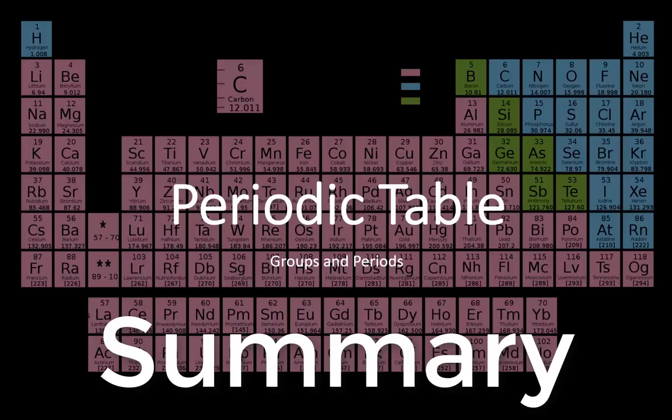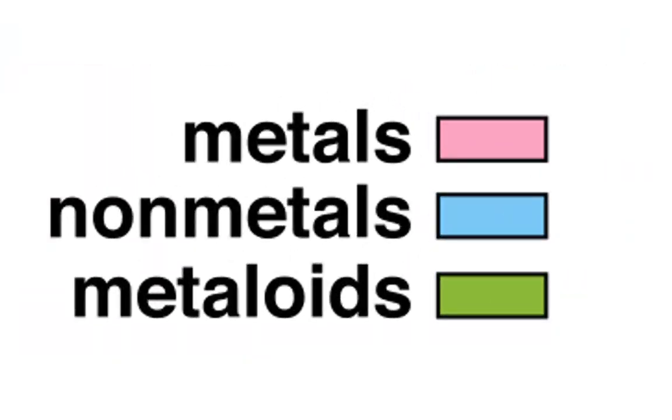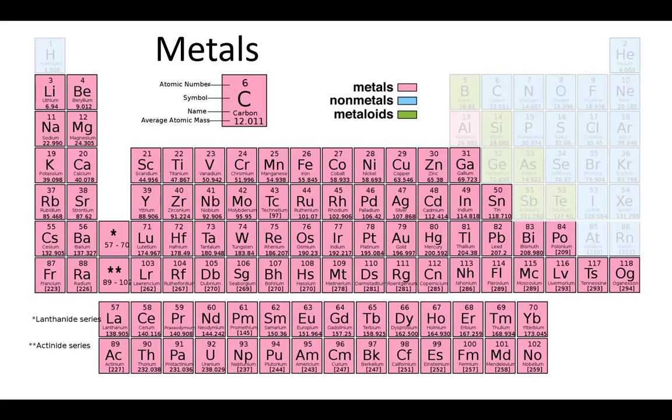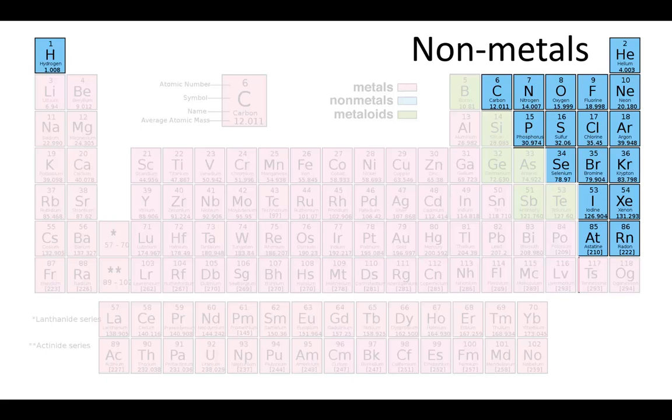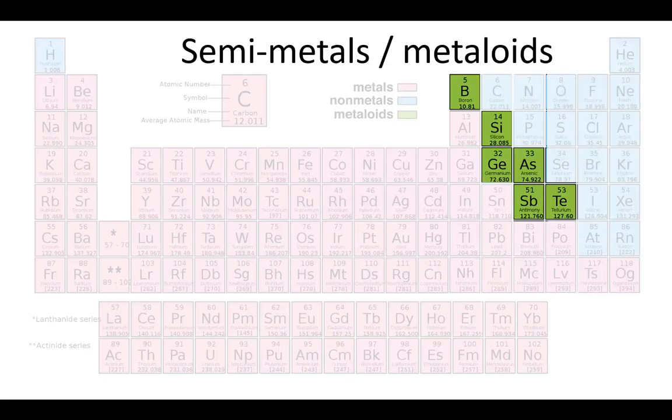So, in summary, we've learnt that there are three main groups in the periodic table: metals on the left, non-metals on the right, and metalloids in between.